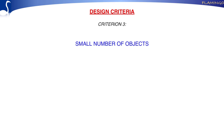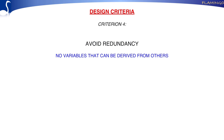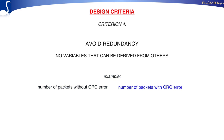The third thing is that there are only a relatively small number of objects defined — around 170 divided over 9 groups. Then, redundancy: redundant variables should not be there. There should be no variables that can be calculated from other variables. For example, if you have the number of packets received without CRC error and the number received with CRC error, you do not need a third variable for the total — because you can calculate it from the first two.